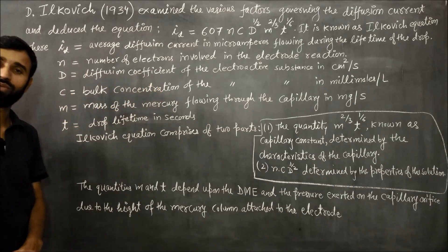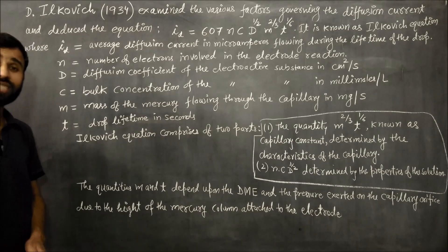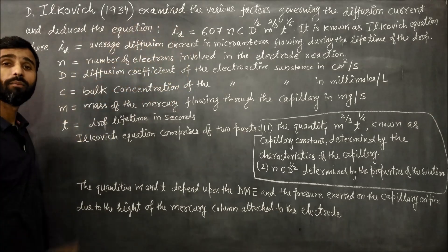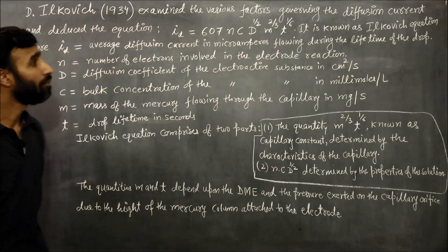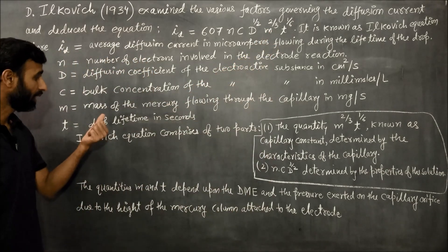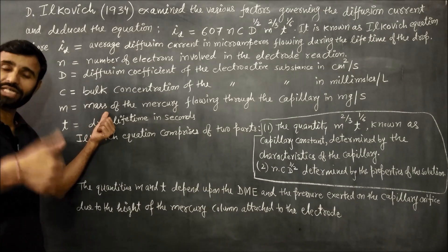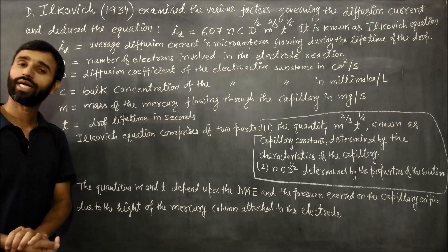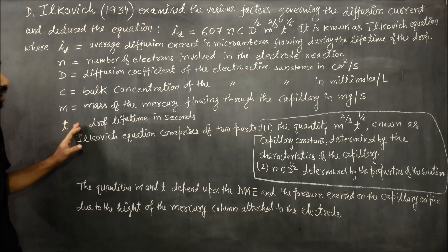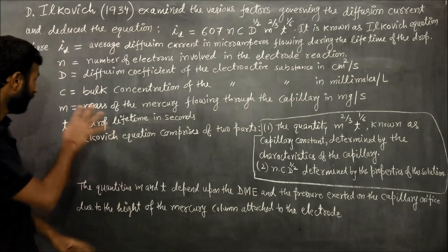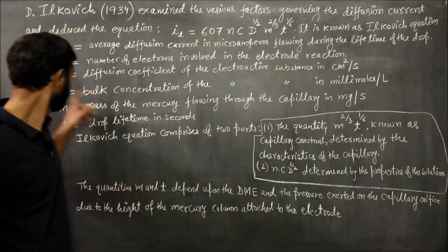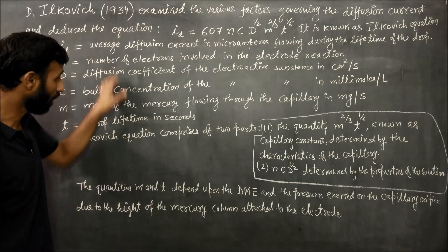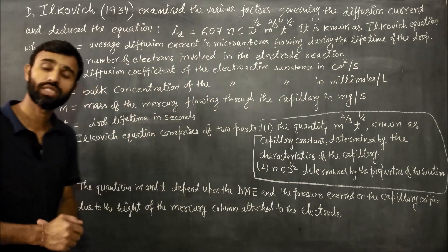d is the diffusion coefficient of the reducible substance in centimeter squared per second. m is the mass flow rate of mercury in milligrams per second, flowing through the capillary. t is the drop lifetime in seconds. If values are not in these units, convert them into the units given.